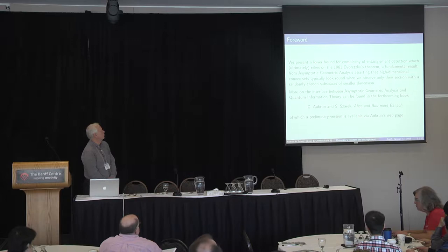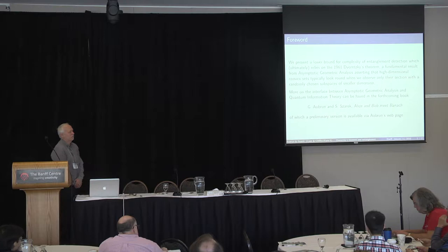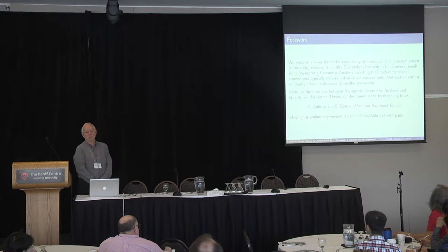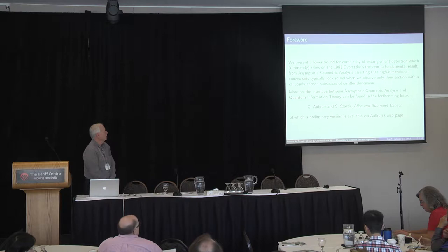Just to recall for people who are not familiar with geometry: the Dvoretsky theorem tells in a very precise way that whenever you have a high-dimensional convex body, then it has sections — in fact most sections — of fairly large dimension which look like Euclidean balls necessarily.